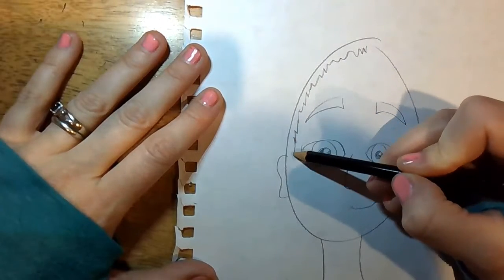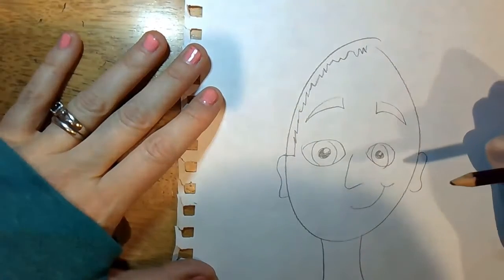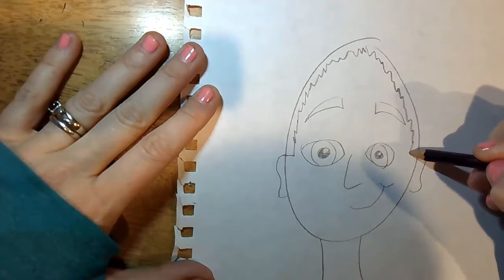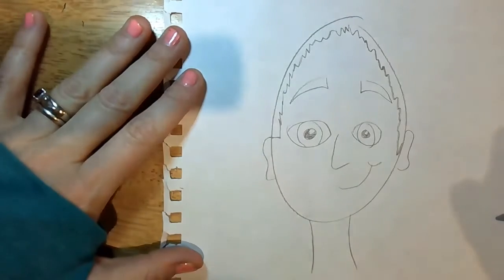And sometimes the boy hair ends right at the ear. Right there. Other boys have hair that comes down in front of their ear. So look in the mirror.